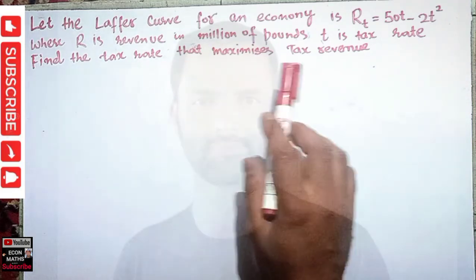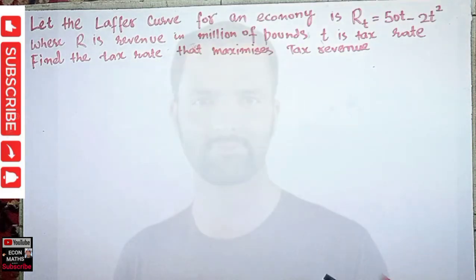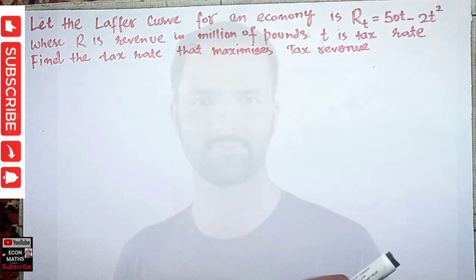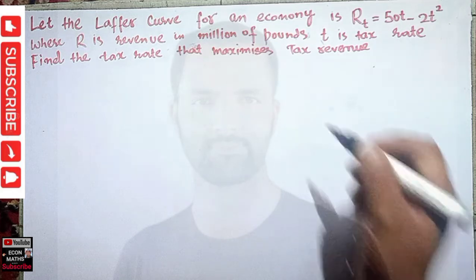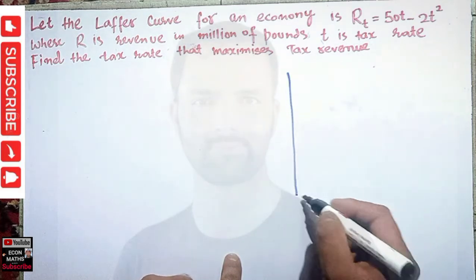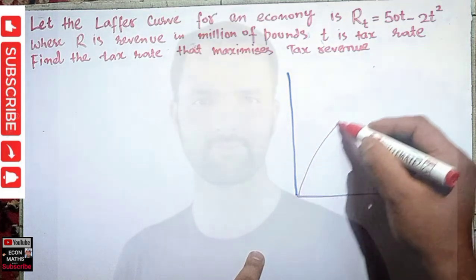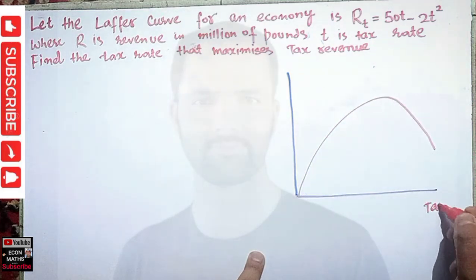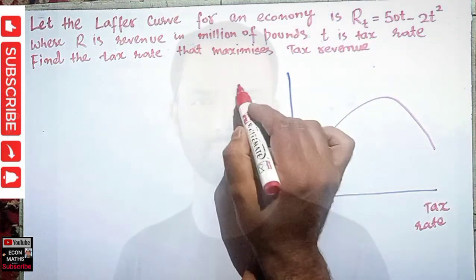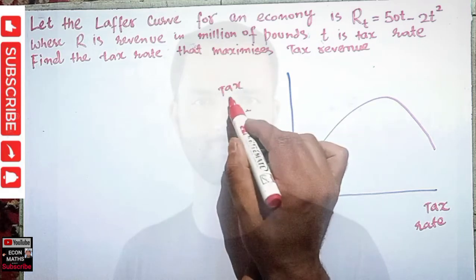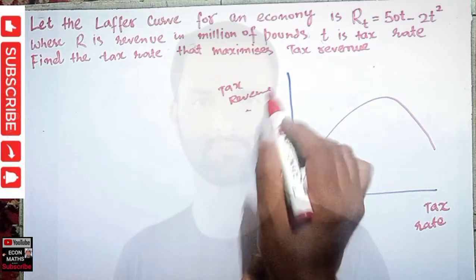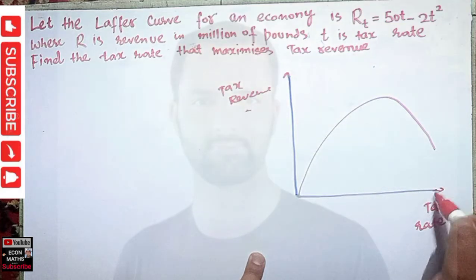We have to find the tax rate that maximizes tax revenue. So what is actually a Laffer curve? A Laffer curve shows us the relationship between the tax rate and the tax revenue collected by the government. Let's draw it here — we have tax rate on the horizontal axis and tax revenue on the vertical axis.